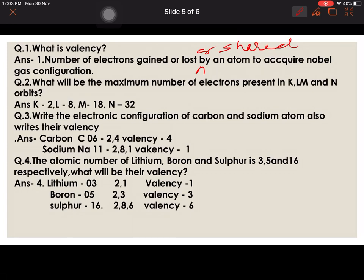Question 2: What will be the maximum number of electrons present in K, L, M, and N orbits? K is 2, L is 8, M is 18, and N is 32.